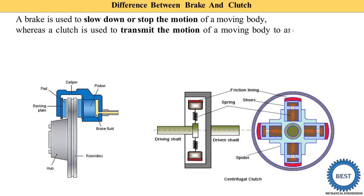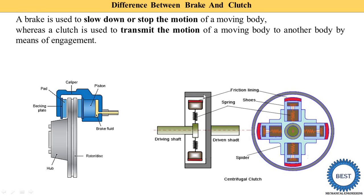A clutch is used to transmit the motion of a moving body to another body by means of engagement. Here you can see the centrifugal clutch. The clutch is used to transmit motion from the driving shaft to the driven shaft when the clutch is in the engaged position — meaning the friction lining is engaged — and at that time the power is transmitted from one shaft to another.